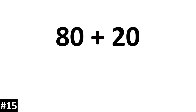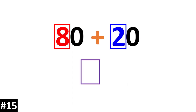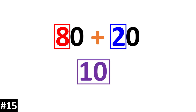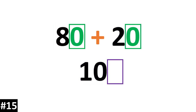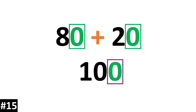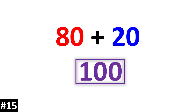80 plus 20. We have 8 tens plus 2 tens which is 10 tens. We look to the ones and we have 0 plus 0, which is 0. The answer is 100.